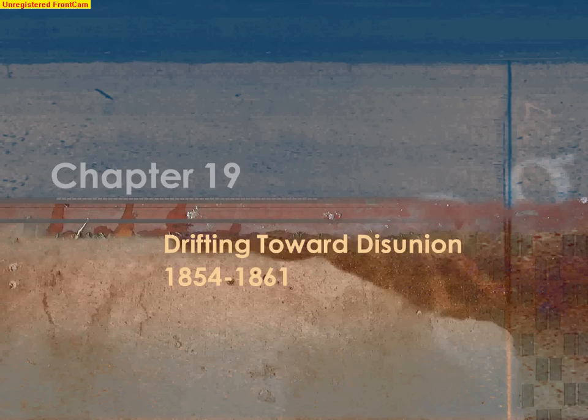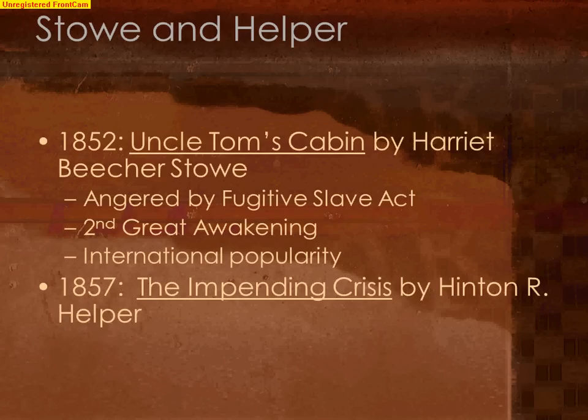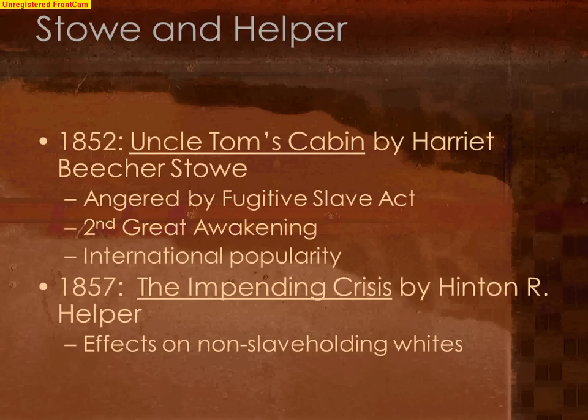Chapter 19 is once again moving towards disunion within the United States — some more of the growing rift between the North and the South that eventually led to the Civil War. We're looking at 1854 to 1861. Before we start looking at the political stresses that were going on between the North and the South, it's important to look at two pieces of literature published in the 1850s that helped prompt this anger.